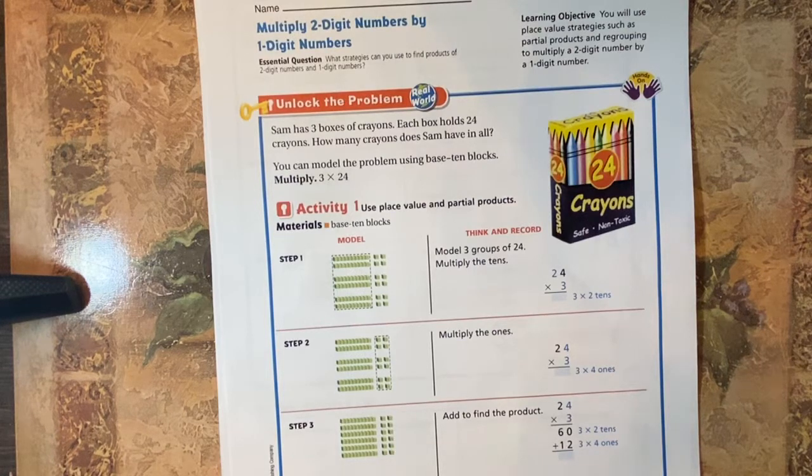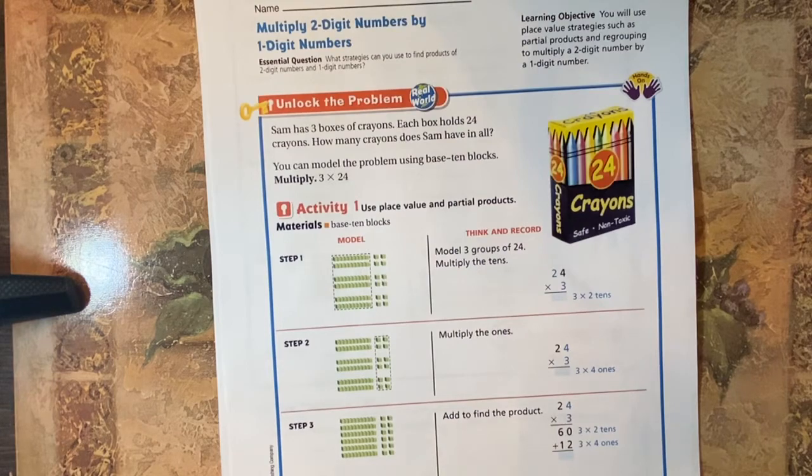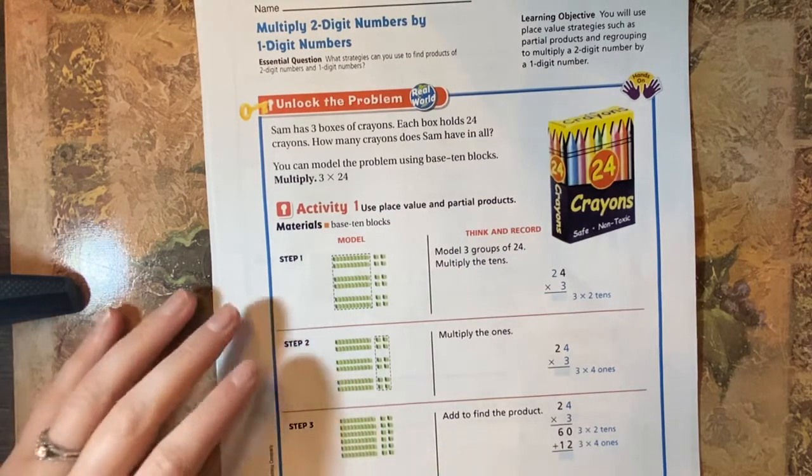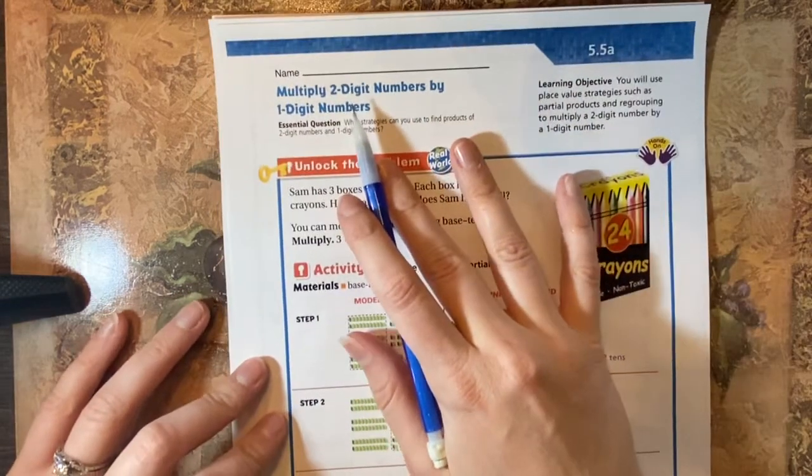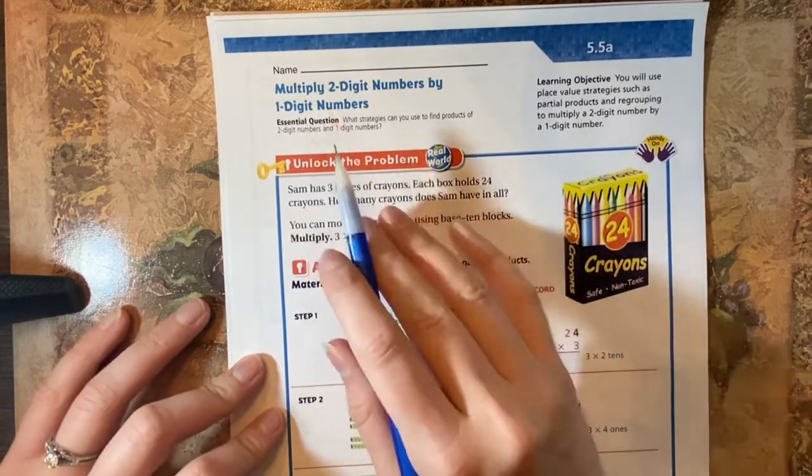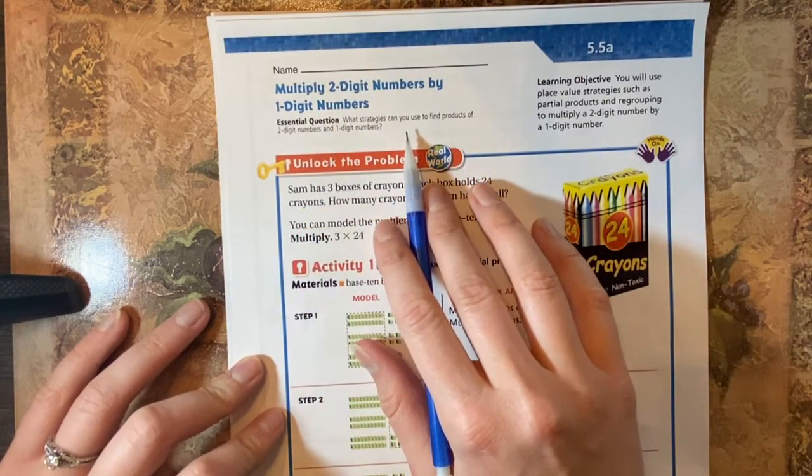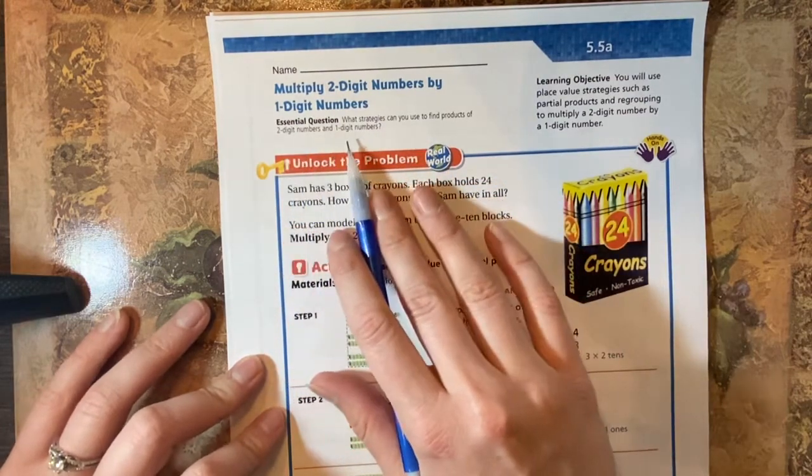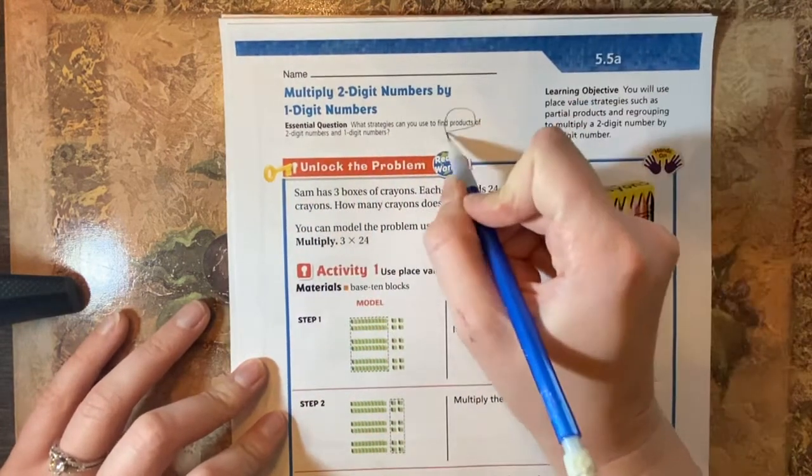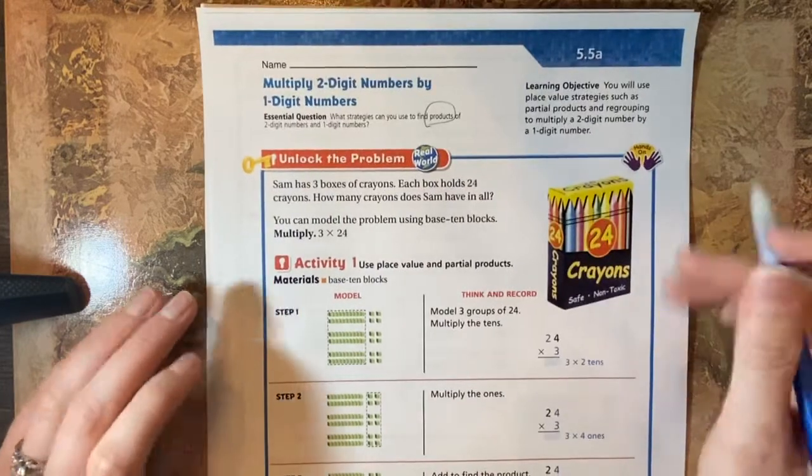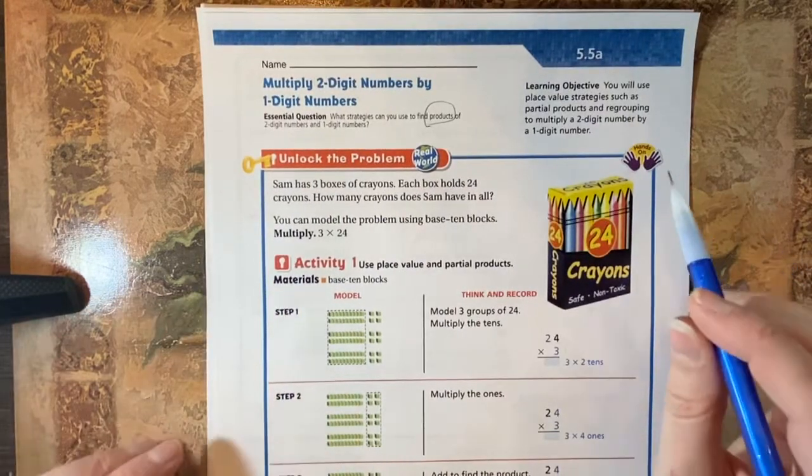Hey guys, we have learned about how to multiply one-digit numbers and up to 11 and 12, but now we're going to be learning how to multiply two-digit numbers by one-digit numbers. So our essential question is, what strategies can you use to find products of two-digit numbers and one-digit numbers? And remember that word products? A product is the answer to a multiplication problem.